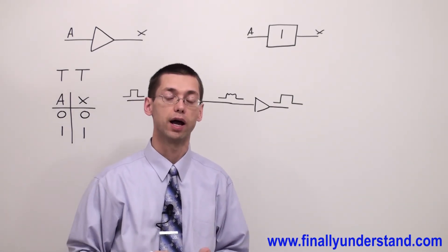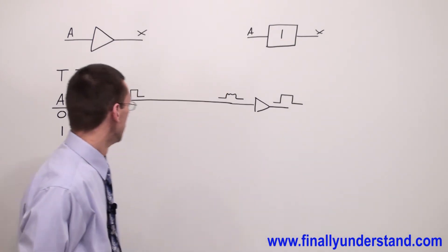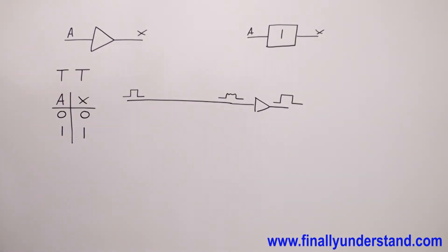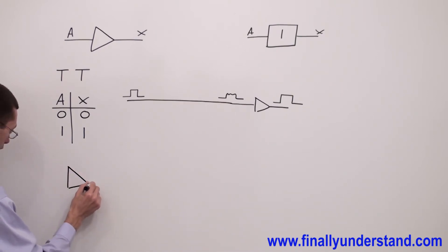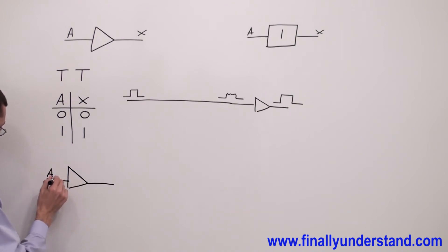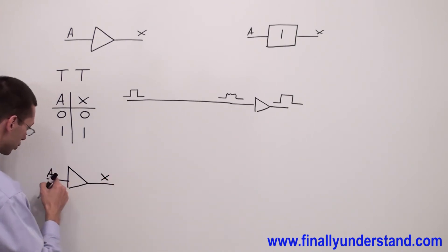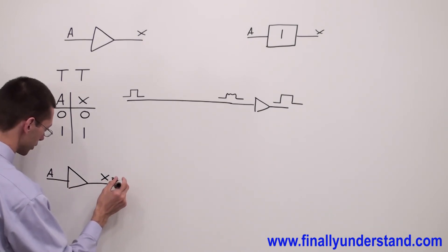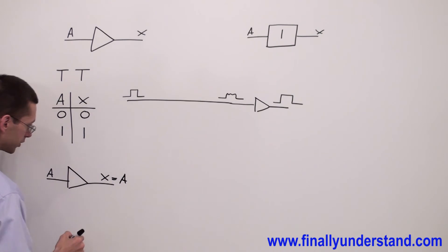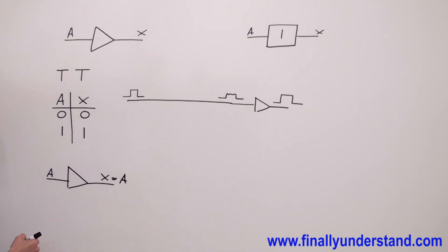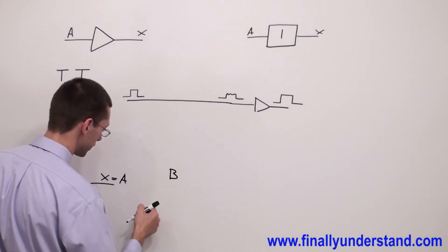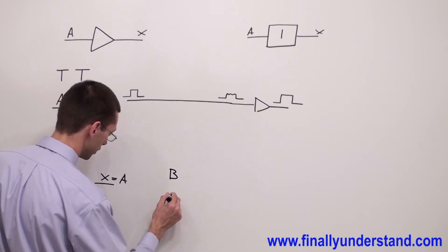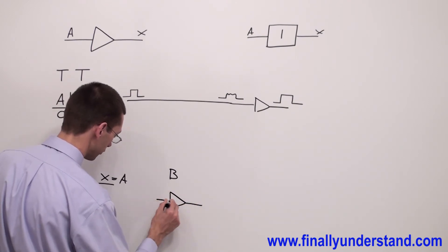This is a buffer, which is going to amplify the signal. This is the truth table. Next, we are supposed to talk about the logic expression. When we have a buffer with input A, and because the output is going to be equal to the input, the logic expression for a buffer is simply A. If you have logic expression B, it automatically means that we have gate Yes, or buffer, with input B.